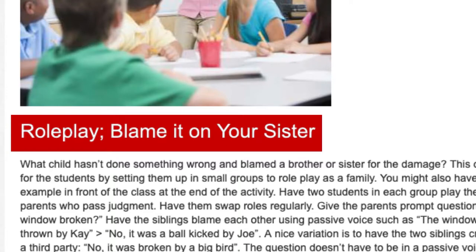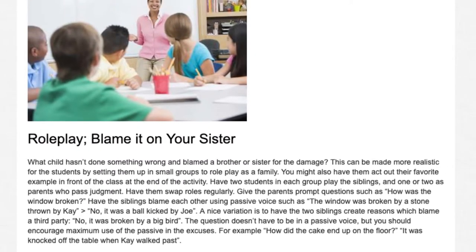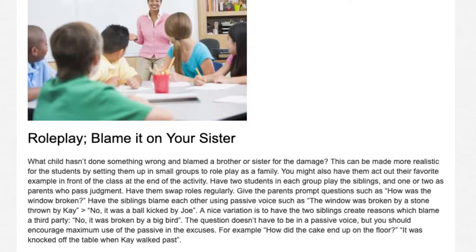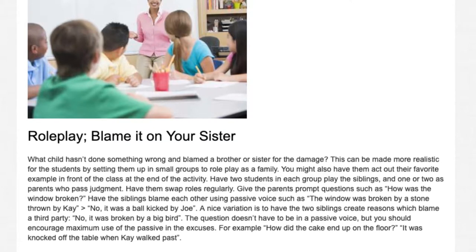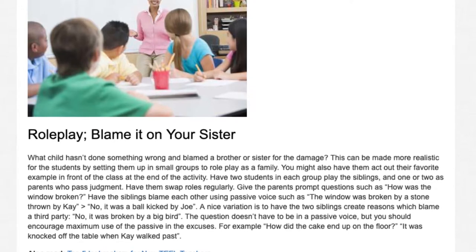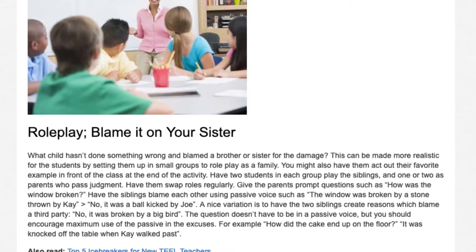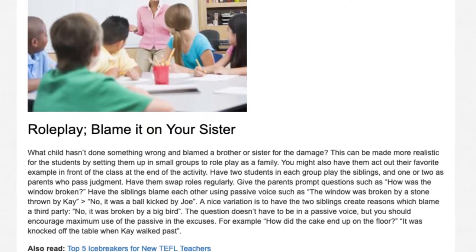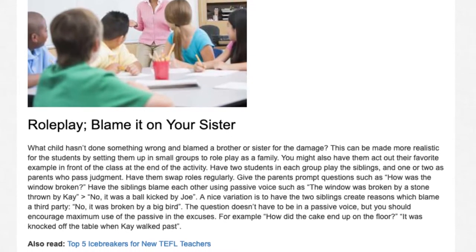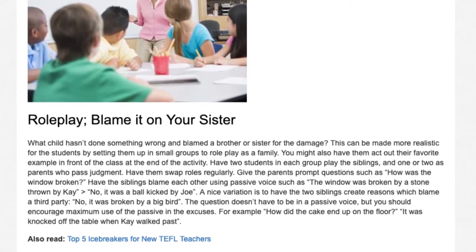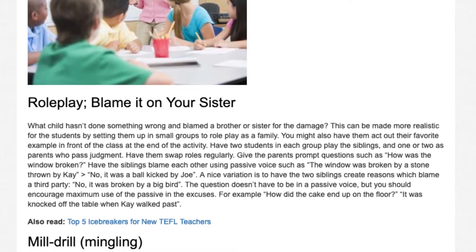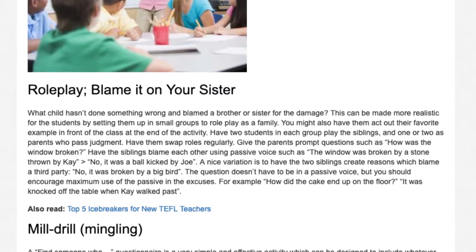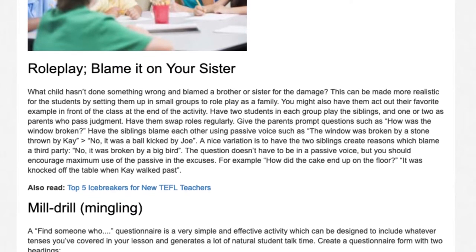6. Role Play — Blame It on Your Sister. What child hasn't done something wrong and blamed a brother or sister for the damage? Set students up in small groups to role play as a family, acting out their favorite example in front of the class at the end. Have two students play siblings and one or two as parents who pass judgment. Have them swap roles regularly. Give parents prompt questions such as 'How was the window broken?' Have the siblings blame each other using passive voice: 'The window was broken by a stone thrown by K.' 'No, it was a ball kicked by Joe.' A variation is to have siblings blame a third party: 'No, it was broken by a big bird.' Encourage maximum use of the passive in the excuses.